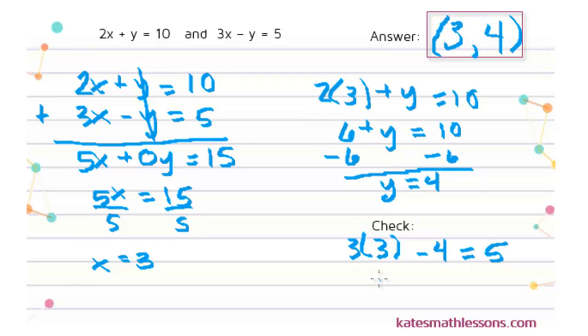But in our case, 3 times 3 is 9, and 9 minus 4 does equal 5, so that means that we did get the right answer. So our answer to this system is the ordered pair 3, 4.